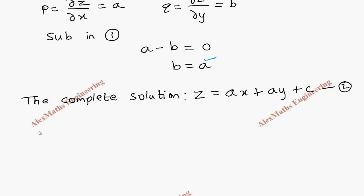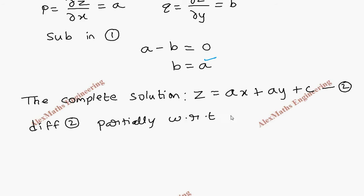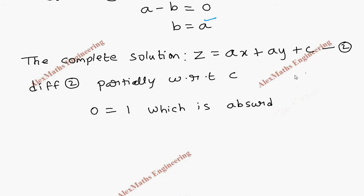Differentiating the second expression partially with respect to the constant c gives 0 = 1, which is absurd. Therefore there is no singular integral.